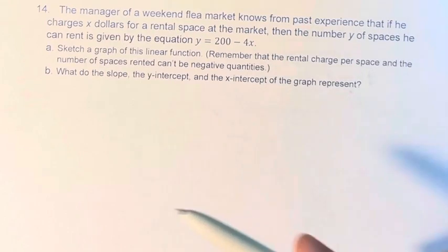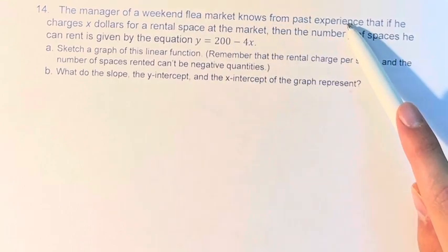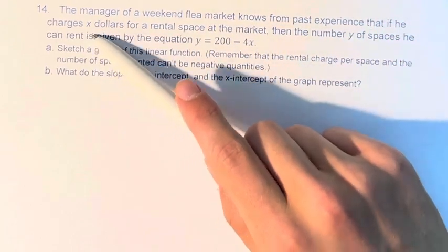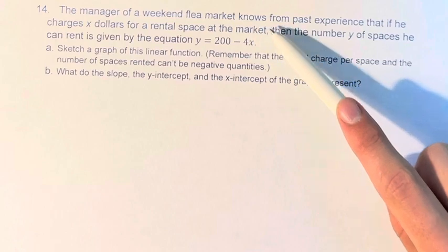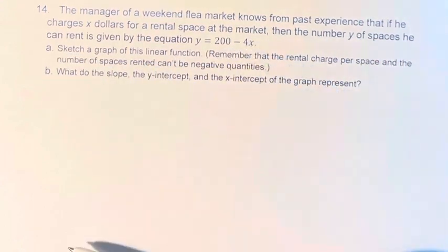Hello, and welcome back to another video. In this problem, we're told that the manager of a weekend flea market knows from past experience that if he charges x dollars for a rental space at the market, then the number y of spaces he can rent is given by the equation y equals 200 minus 4x.